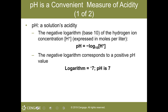Back to pH: it's a negative logarithm — log base 10 — and it's all about hydrogen ion concentration expressed in moles per liter. The negative logarithm corresponds to a positive pH value. pH 7 is neutral. For example, distilled water has a pH of 7, tomato juice has a pH of 4.2, and an egg white has a pH of approximately 8.